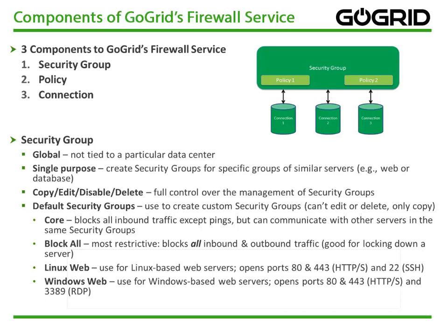Your default security groups are used to create custom security groups. To create one of your own, you simply copy one of the defaults. You can't edit or delete the default groups. The default groups consist of: Core, which blocks all inbound traffic except pings; Block All, which is the most restrictive and blocks all inbound and outbound traffic; Linux Web, which is used for Linux-based web servers; and Windows Web, which is used for Windows-based web servers.